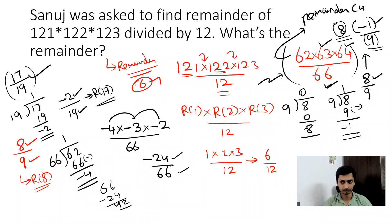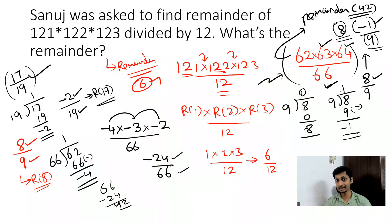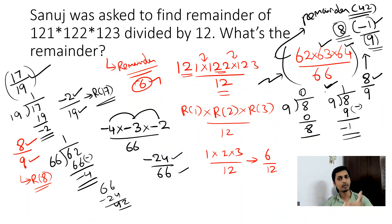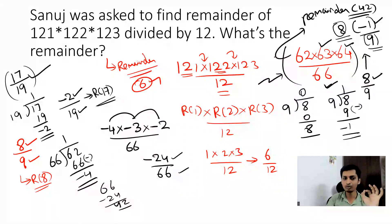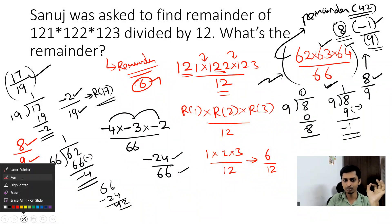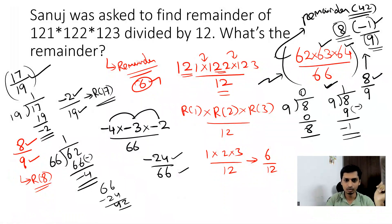So the positive remainder for 62 × 63 × 64 ÷ 66 is 42. It looks very easy! You can convert negative remainder to positive and vice versa. This kind of question is very popular in competitive exams. Now here's a workout for you: find the remainder of 51 × 52 ÷ 53 — put your answer in the comments below.